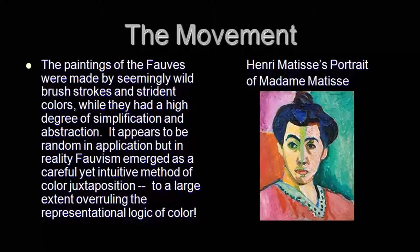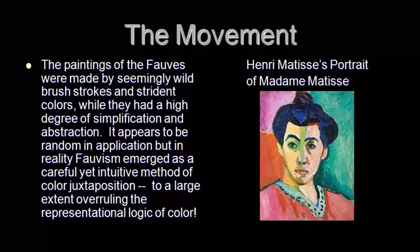When you look at a Fauvist painting, maybe for the first time, the paintings of the Fauves were made by seemingly wild brushstrokes and surprising colours, while they had a high degree of simplification and abstraction. It appears to be random in application but in real, the forms that emerged as a careful yet intuitive method of colour juxtaposition, to a large extent overruling the representation logic of colour — and this is crucial to the understanding of Fauvism.